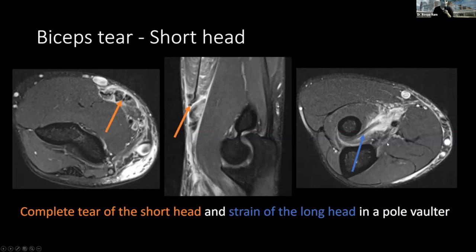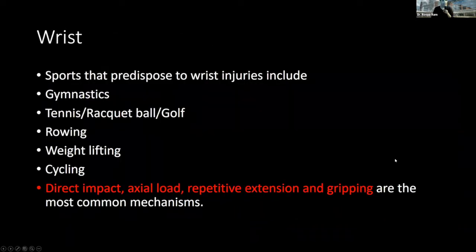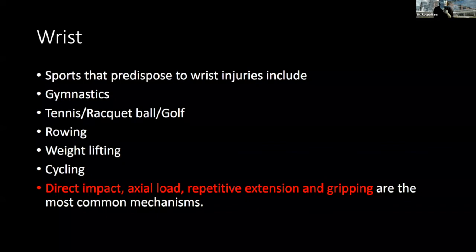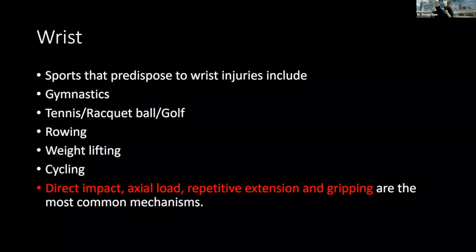Biceps has a long head and a short head. In a pole vaulter, one head was completely torn and retracted while the other was only sprained but intact to the bicipital tuberosity. The long head attaches more on the radial and distal side, the short head more on the ulnar and proximal side. To summarize the elbow: valgus and hyperextension are the main mechanisms; look for medial tensile injuries, lateral compressive injuries, VEO osteophytes, and osteochondral defects of the capitellum.